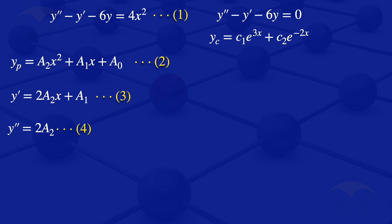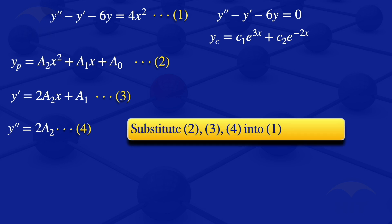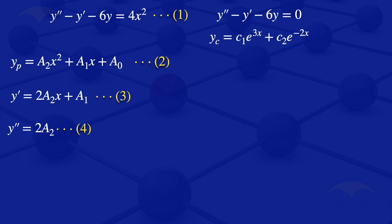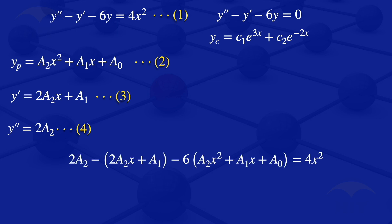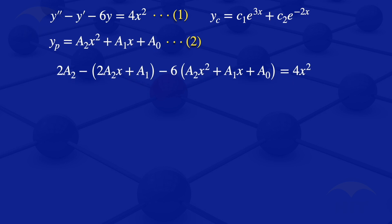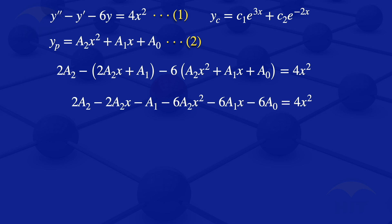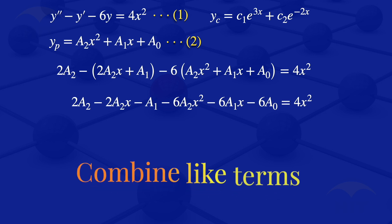We now substitute equations 2, 3, and 4 into equation 1. This gives: 2a2 minus (2a2·x plus a1) minus 6·(a2·x squared plus a1·x plus a0) equals 4x squared. Multiplying through by the negative sign and by minus 6, we get: 2a2 minus 2a2·x minus a1 minus 6a2·x squared minus 6a1·x minus 6a0 equals 4x squared.